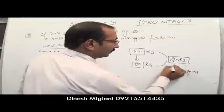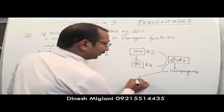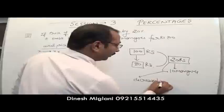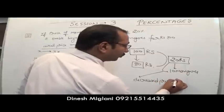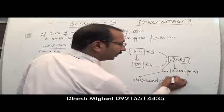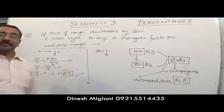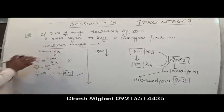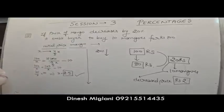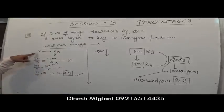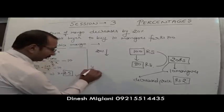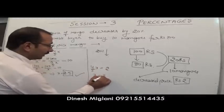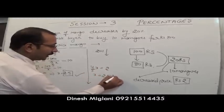It means the decreased price of the mango is ₹2 per mango. The decreased price is 4/5 x = 2. Solving, the initial price x = ₹2.5. That is our answer.